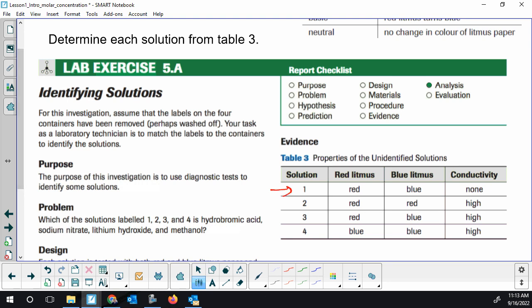Something you probably did similar last year. The very first solution, red litmus stayed red. Solution one, blue litmus stayed blue. So neither litmus changed color, and it was non-conductive. The second solution, red stayed red. Blue turned red, and it was highly conductive. So none of the litmus changed.